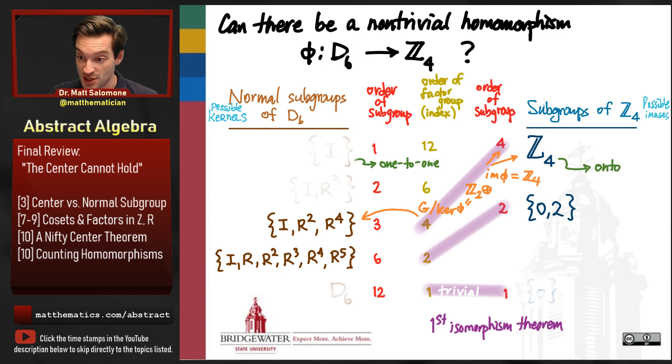But if the image is a cyclic group, that means that the factor group, G mod the kernel of phi, has to be cyclic as well. But in our previous video, we checked that the factor group of G by this normal subgroup is actually not cyclic.